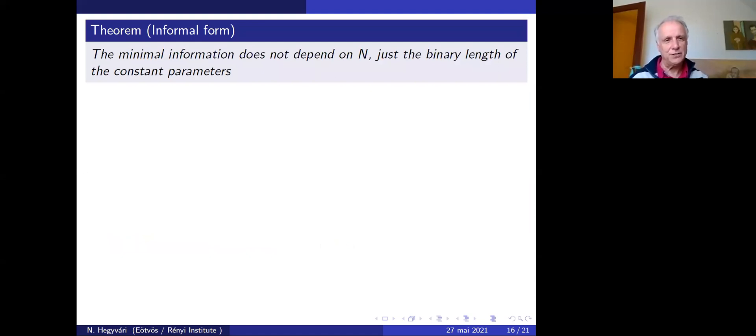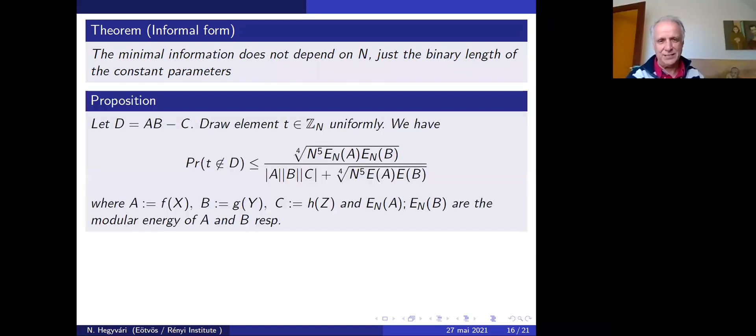The proposition is the main result. The minimum information does not depend on n, just the binary lengths of constant parameters. Let D be the probability form: the chance that T does not belong to D can be written involving the ratio of cardinalities and the modular additive energies E(A) and E(B).